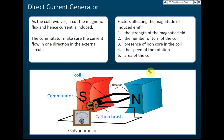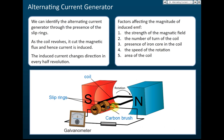For the direct current generator, the very first thing you need to know is there are two types of generators: the direct current generator and the alternating current generator. You need to know which is which because they look similar. Here is a direct current generator, and this is an alternating current generator — they look similar.